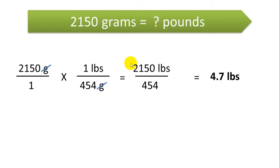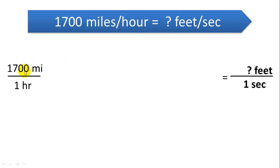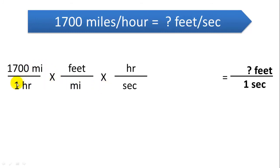Those are simple unit conversion problems. Now we'll look at a problem with units in both the numerator and denominator — like a rate of speed. A bullet travels at about 1,700 miles per hour; we want to find how fast that is in feet per second. We have miles in the numerator and hours in the denominator, and we want feet in the numerator and seconds in the denominator. So we set up: 1,700 miles per one hour, and first cancel out the miles since our solution needs feet.